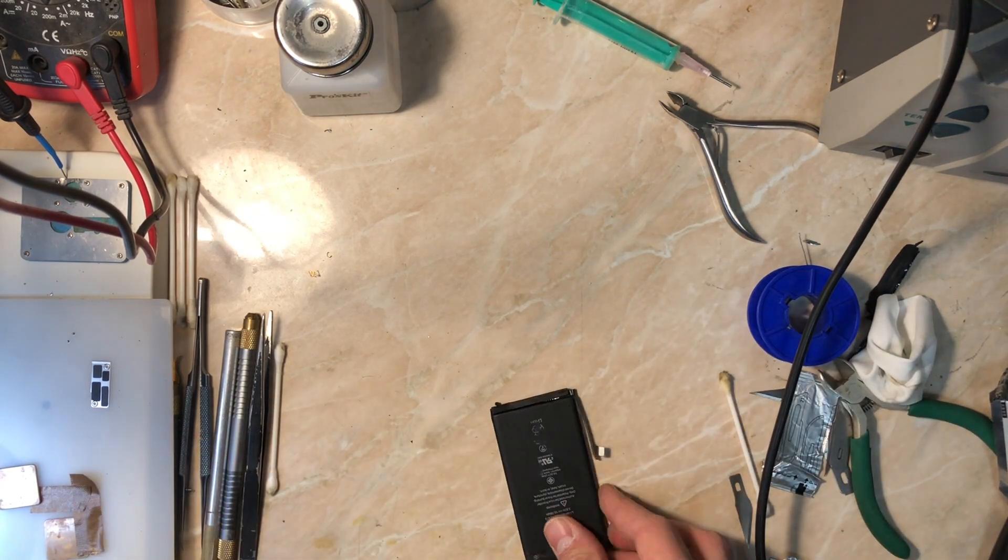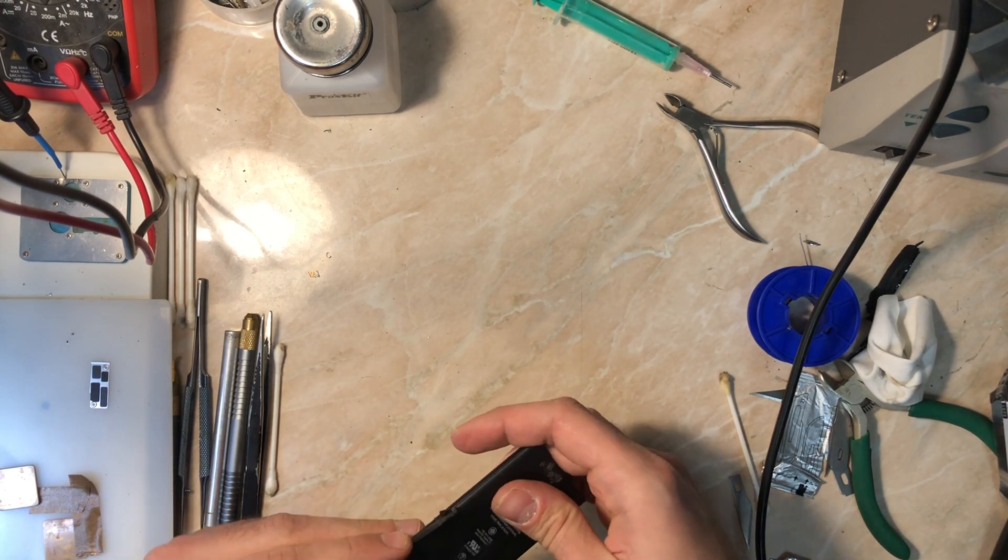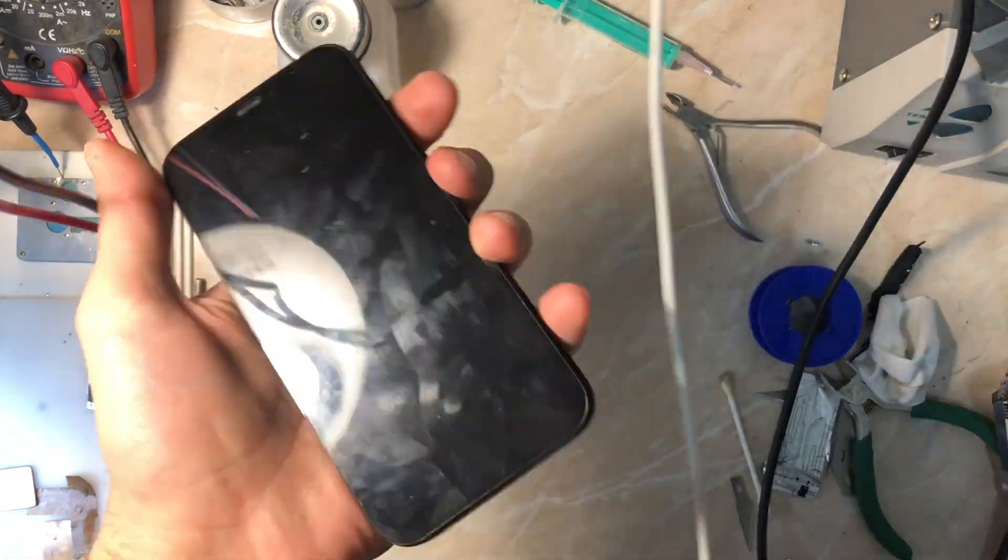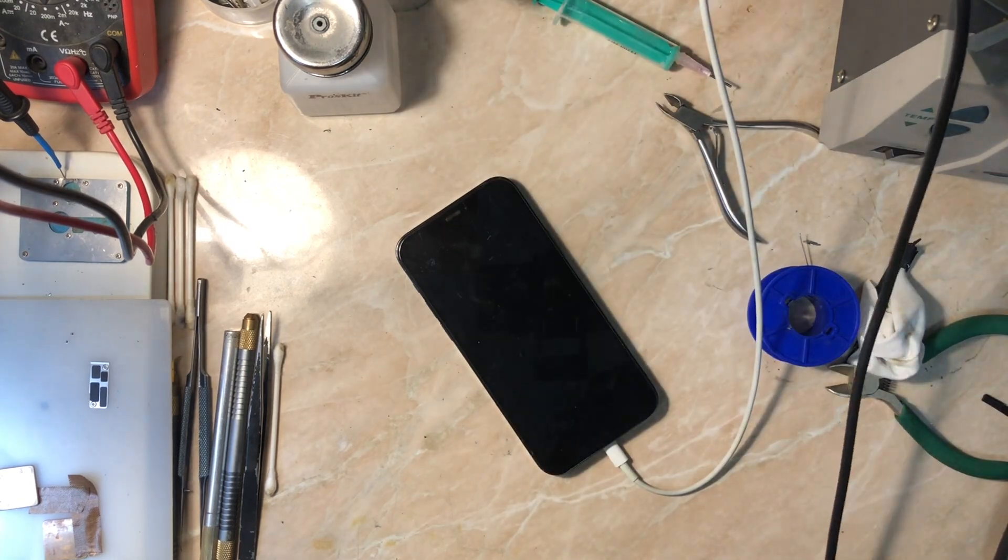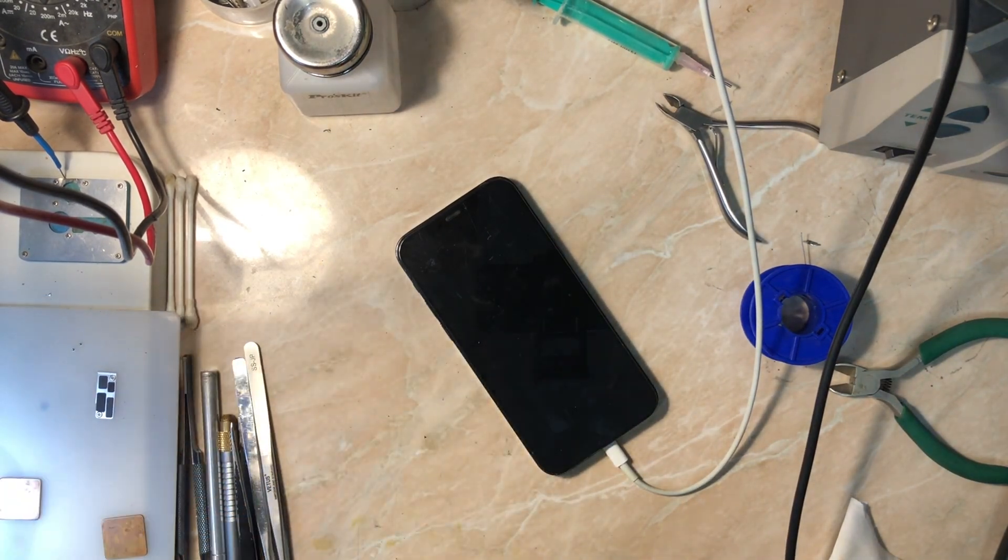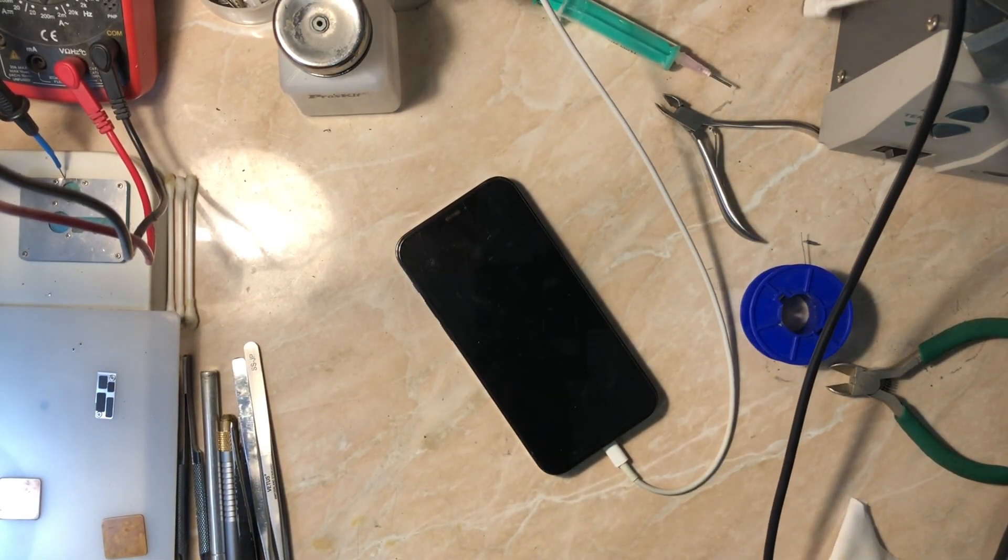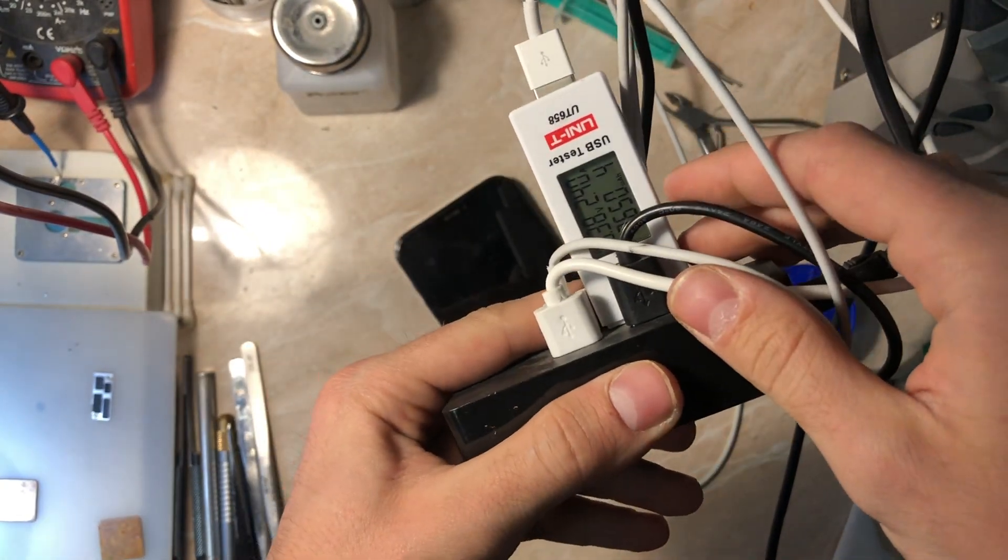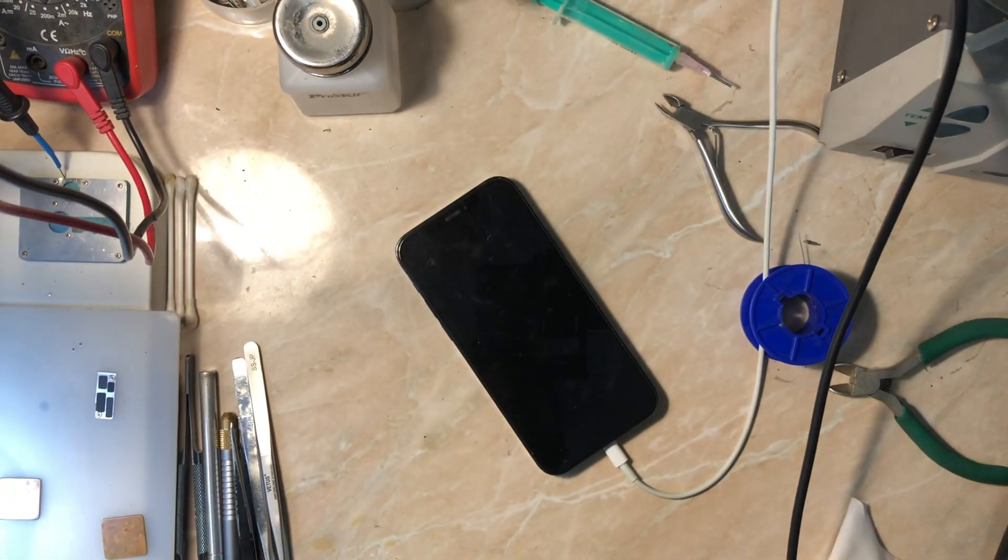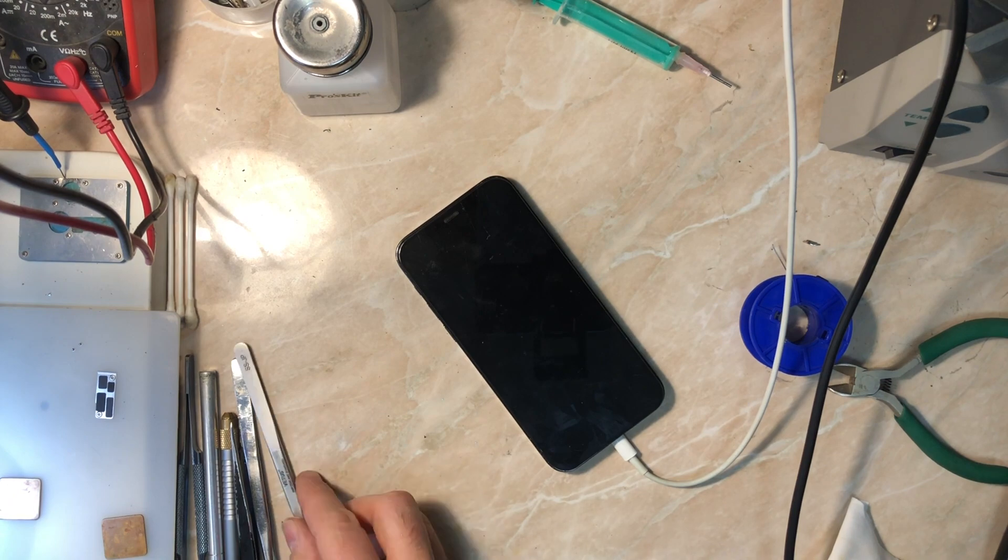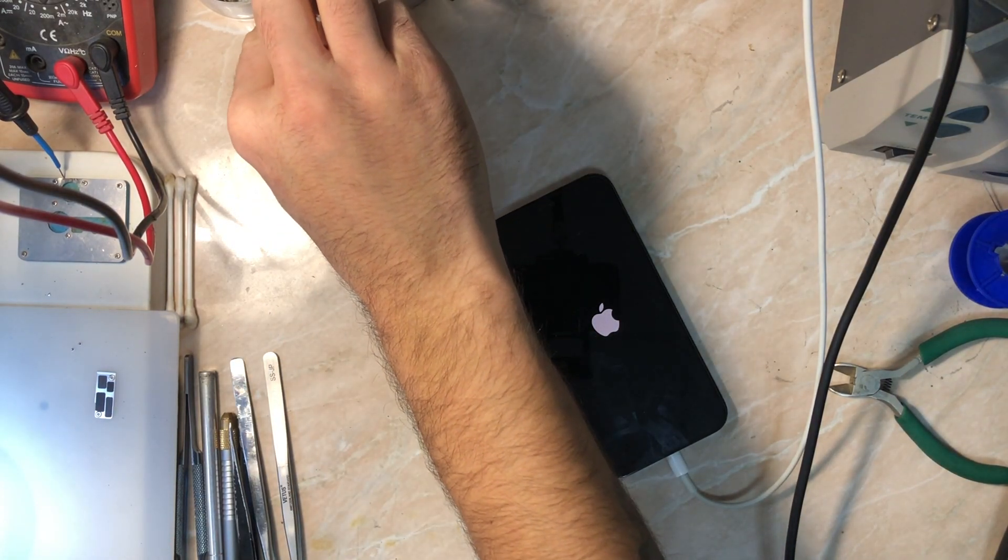Now for the final test, it's not my finest work to be honest or the cleanest work, but let me just put the sticker. You can see that the phone is charging. I'm going to show you on my USB tester how much the phone takes when it's charged. You can see two amps, that means that the phone is charging and of course reading the battery, but the real test will be when the phone turns on.